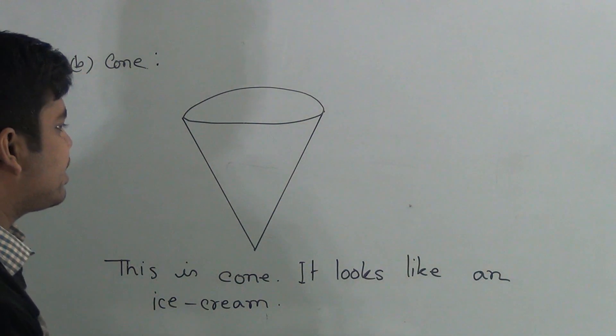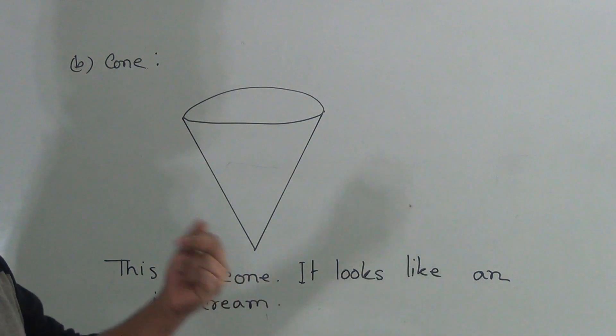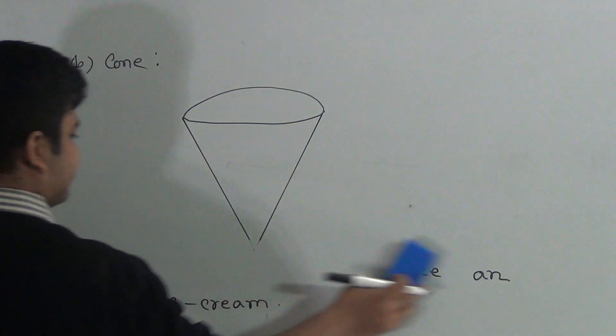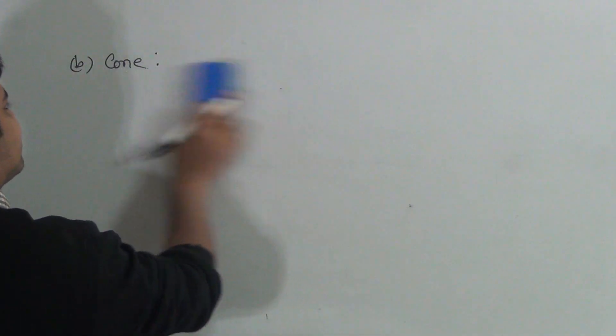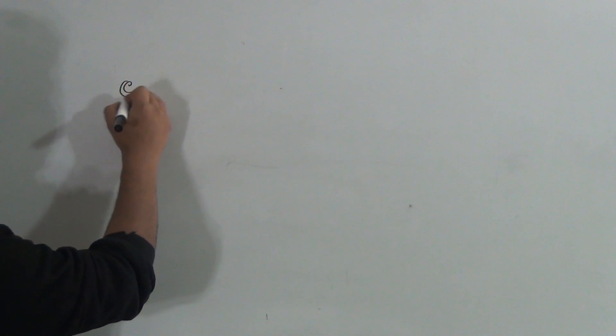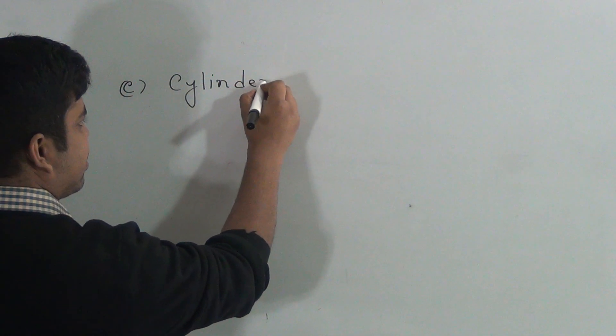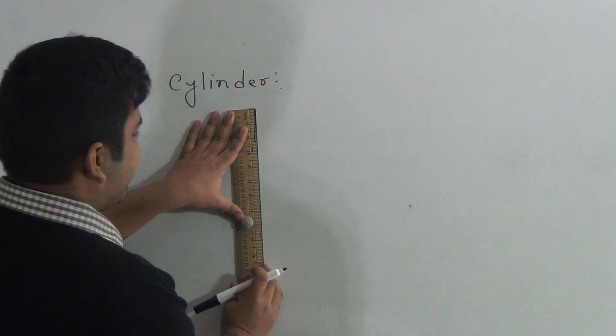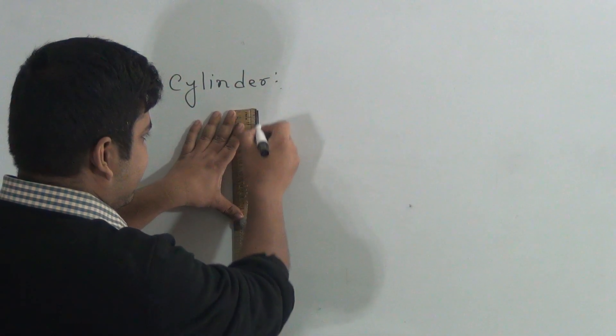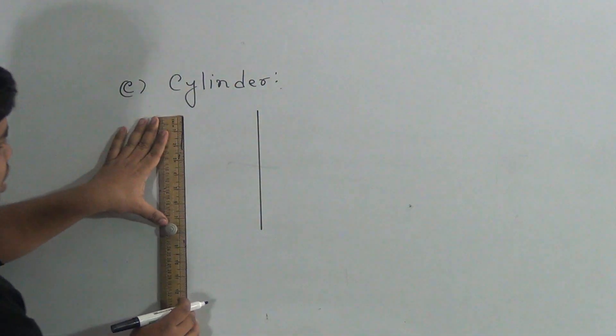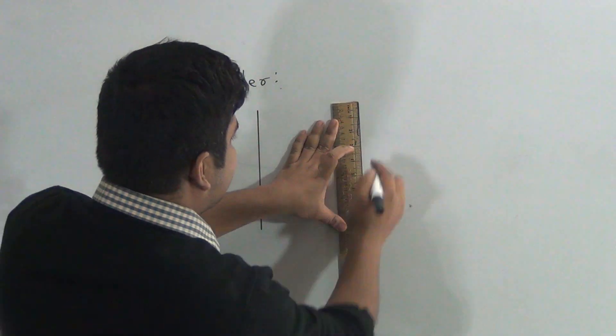I erase this. And next we shall learn cylinder. Question number C, cylinder. It is so easy. First of all, we draw a straight line. Then we draw another straight line.